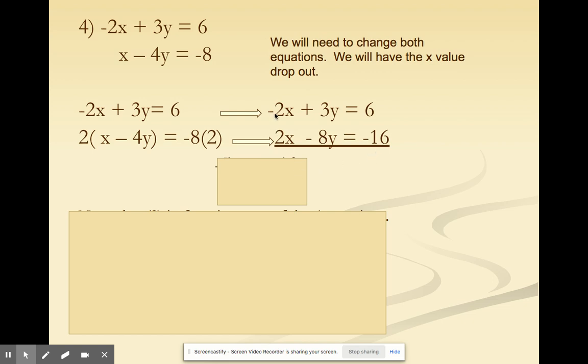We're going to add those equations together, so negative 2x plus 2x is 0. 3y plus negative 8y is going to give us negative 5y, and 6 plus negative 16 will leave us with negative 10. We want to get y isolated, so we're going to divide everything by negative 5, and that will give us y equals 2.